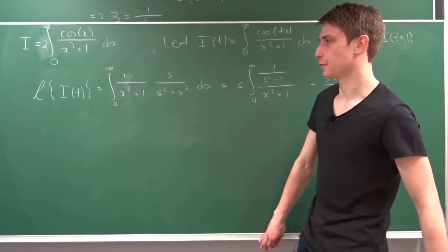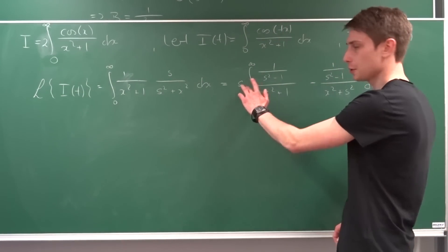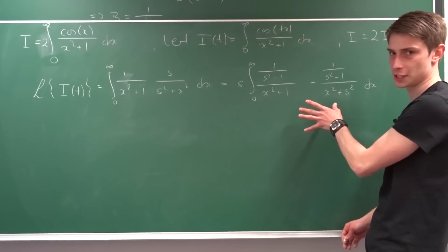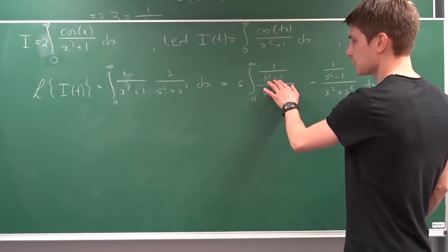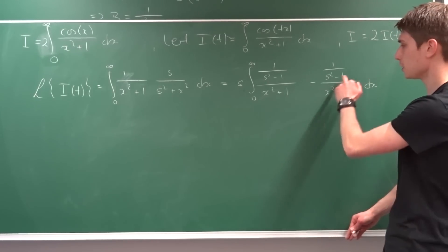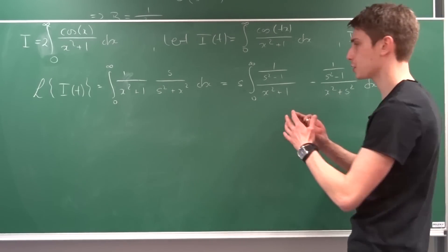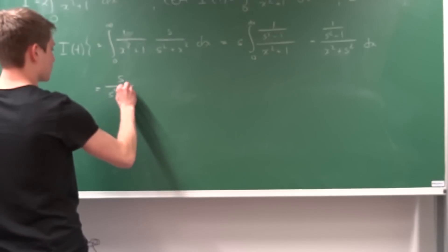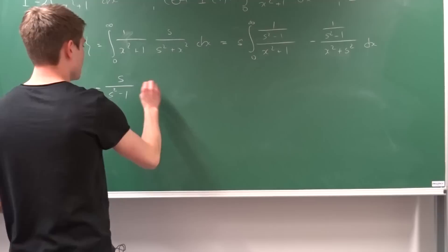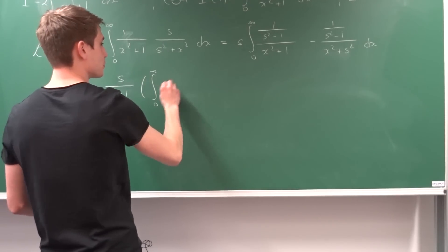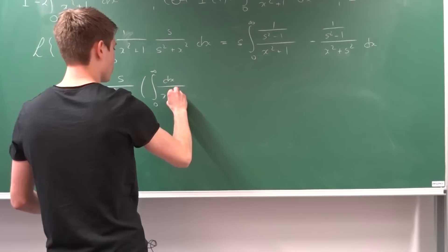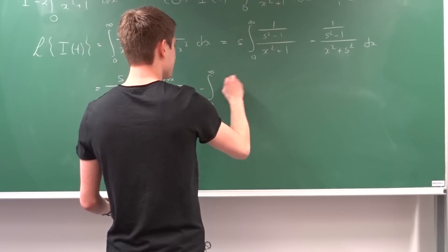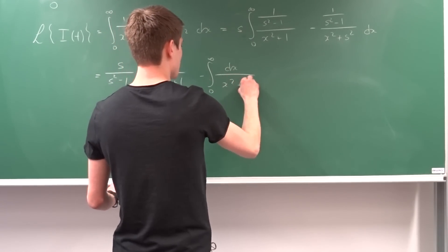As you can see, I've plugged everything in. I brought the s factor outside using linearity of the integral, and now we have this expression. We bring the common factor 1 over (s squared minus 1) outside, and use the linearity of the integral to split it into two integrals. So we have s over (s squared minus 1) times: first the integral from 0 to infinity of dx over (x squared plus 1), minus the integral from 0 to infinity of dx over (x squared plus s squared).